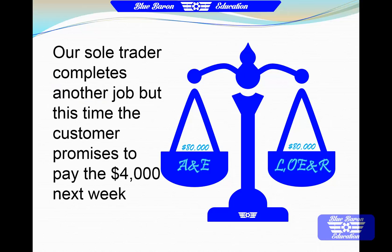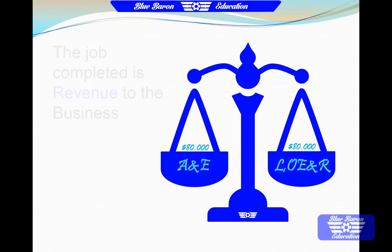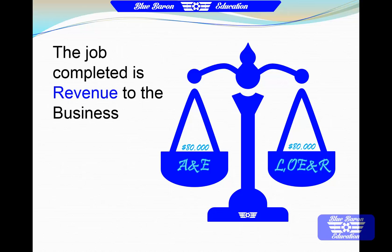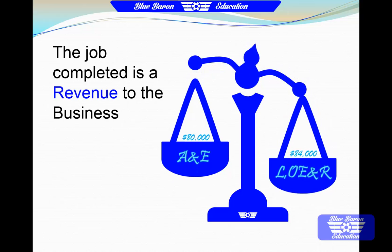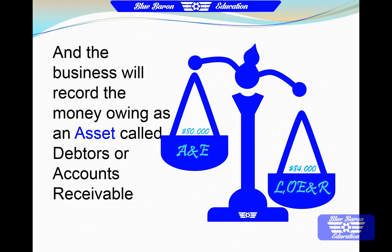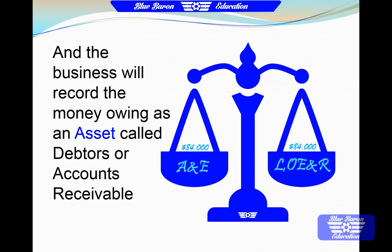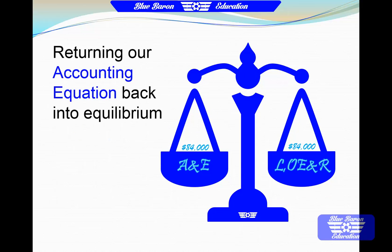Our sole trader completes another job, but this time the customer promises to pay the money next week. The job completed is revenue, and the business will record the money owing as an asset called debtors or accounts receivable, returning our accounting equation back into equilibrium.